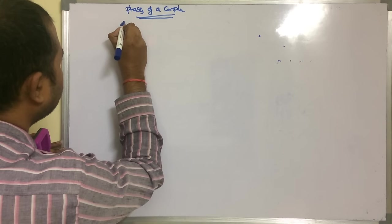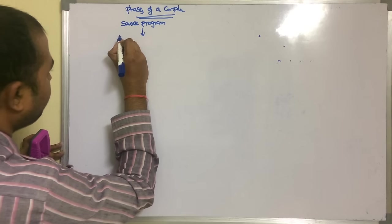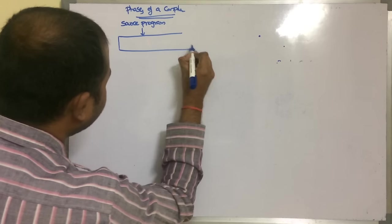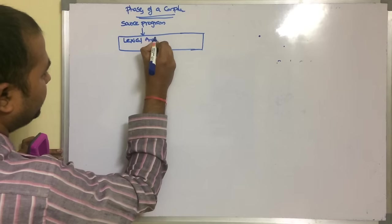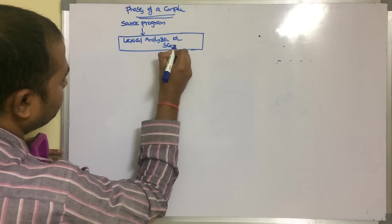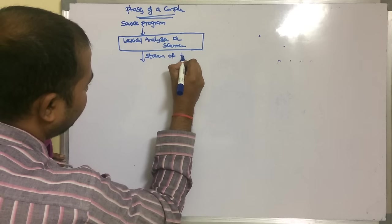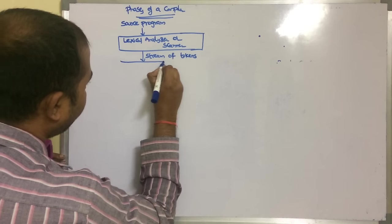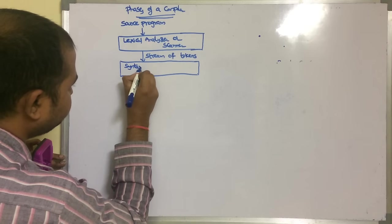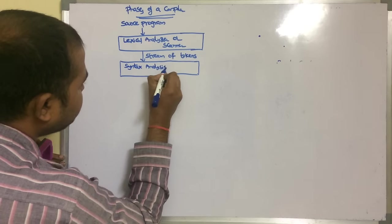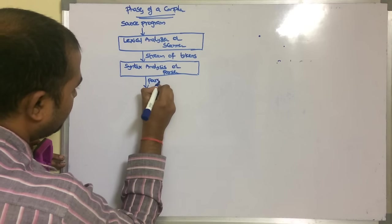Here, first we have to supply the source program as input to the lexical analyzer. The first phase of compilation is known as lexical analyzer, also called scanner. Lexical analyzer produces a stream of tokens as the output. These tokens will be supplied as input to the next phase, which is syntax analysis, also called parser. Syntax analysis produces a parse tree as the output.